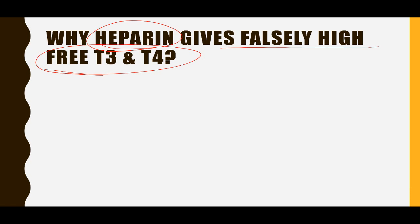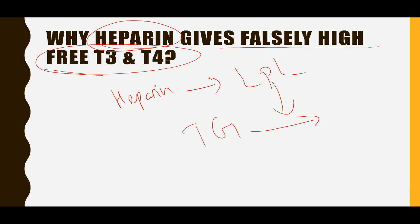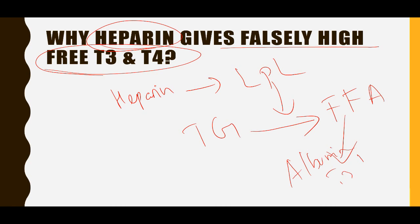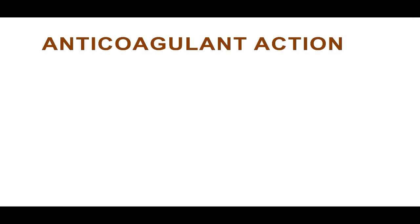One more important point: heparin gives falsely high free T3 and T4. When a person is injected with heparin, lipoprotein lipase is released. This LPL hydrolyzes triglycerides into free fatty acids. These free fatty acids bind to albumin and other proteins, displacing T3 and T4 from their binding sites. As a result, free T3 and free T4 appear falsely elevated.